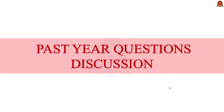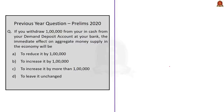Let us take up this question for discussion. This question was asked in last year's preliminary examination. The question is: if you withdraw 1 lakh rupees in cash from your demand deposit account at your bank, the immediate effect on aggregate money supply in the economy will be — option A: reduce it by Rs 1 lakh; option B: increase it by Rs 1 lakh; option C: increase it by more than Rs 1 lakh; option D: leave it unchanged.